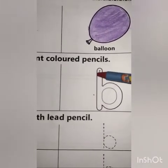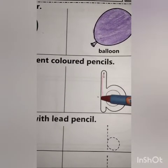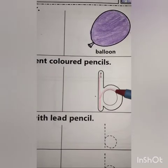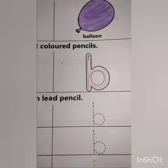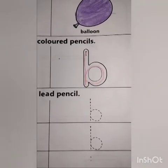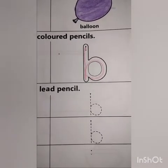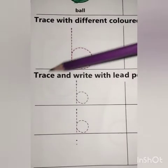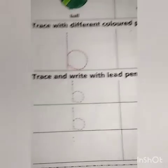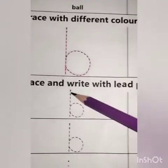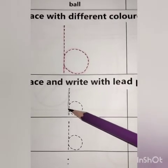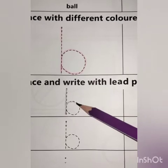Next question is trace and write with lead pencils. Now you have to trace with lead pencils. Start from the arrow, come down, go upward and make a semicircle.